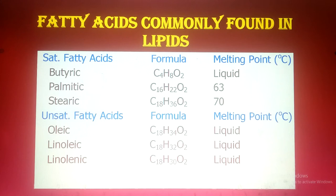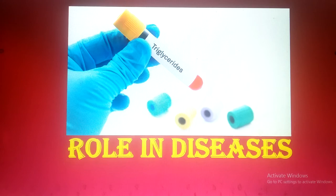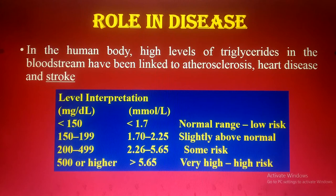Now the role of triglycerides in diseases. In the human body, high levels of triglycerides in the bloodstream have been linked to atherosclerosis, heart diseases, and strokes. The normal level is less than 150 milligrams per deciliter, or less than 1.7 millimoles per liter — this is the normal range and low risk. 150 to 199 is slightly above normal; 200 to 499 carries some risk.